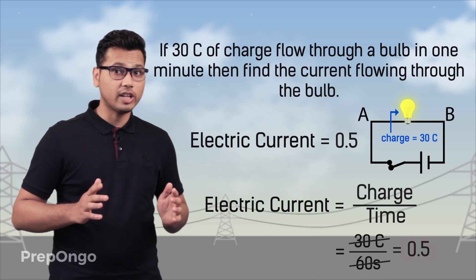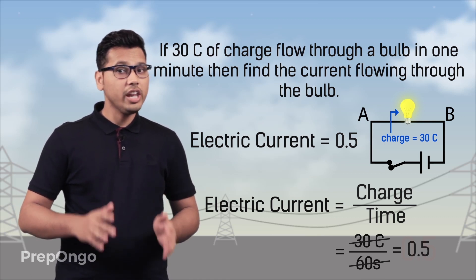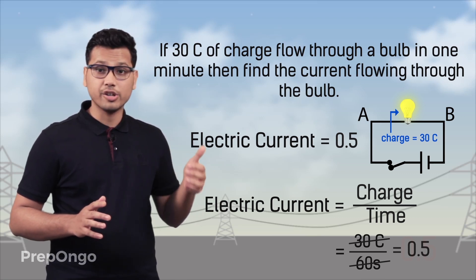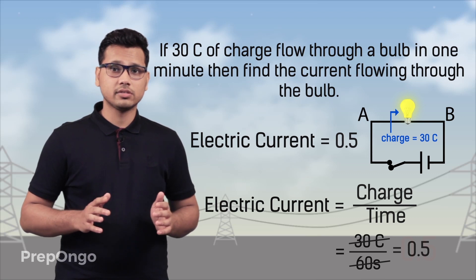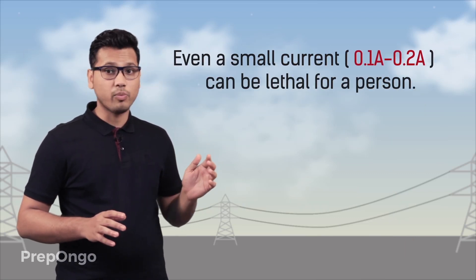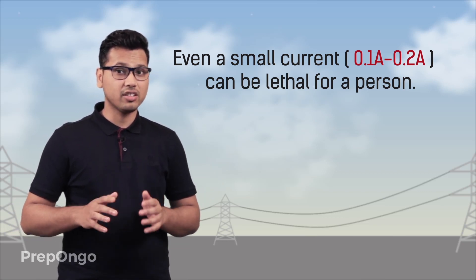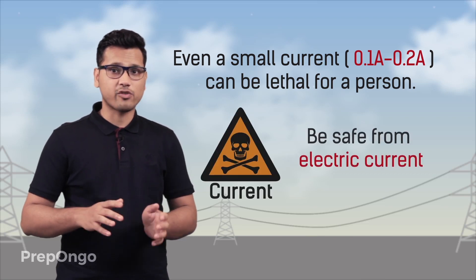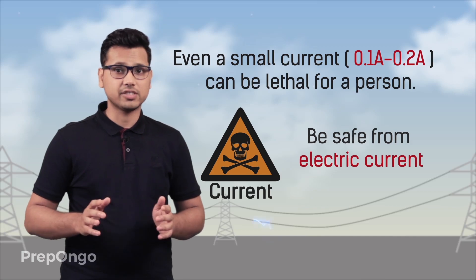Do you know that electric current can be very dangerous for us? Only one-fifth of the current we calculated in the example can be lethal for a person. Only a very small amount — 0.1 to 0.2 amperes — is sufficient to cause the death of a person. So we advise you to be safe from electric current, as it could be very dangerous.